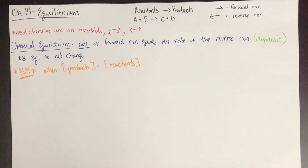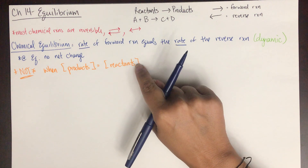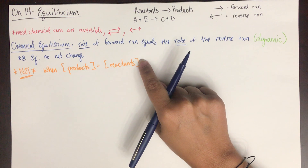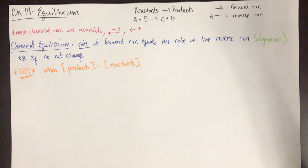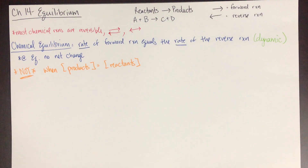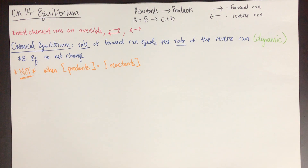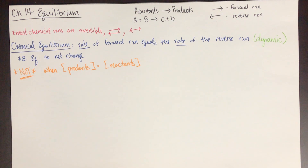Chemical equilibrium is not when the concentration of the products equals the concentration of the reactants — that is a very common mistake. Equilibrium means equal rates: the rate of the forward reaction equals the rate of the reverse reaction, not equal concentrations. So the concentrations are not changing — there's no net change in concentration — but the concentrations are not equal. The word dynamic means we're moving, in contrast to static, which means nothing is moving or changing.